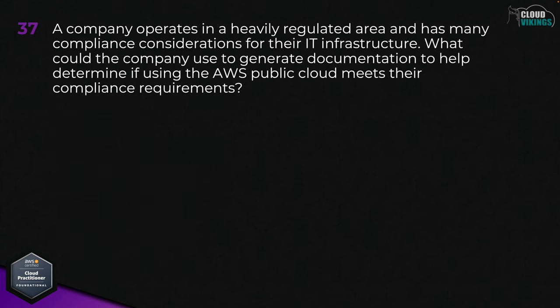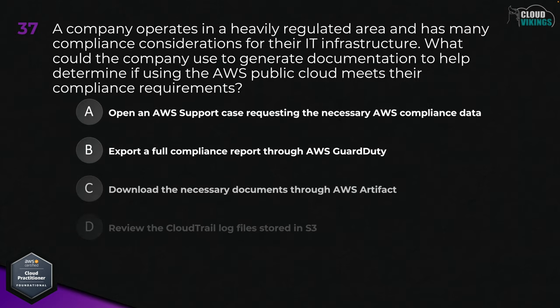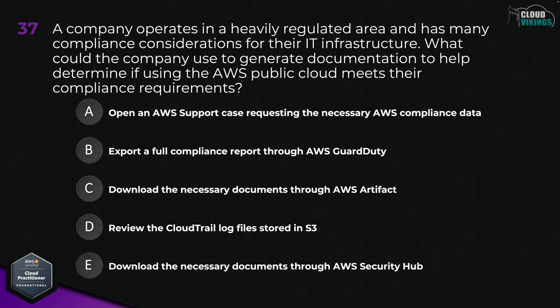Question thirty-seven: a company operates in a heavily regulated area that has many compliance considerations for their IT infrastructure. What could the company use to generate documentation to help determine if using the AWS public cloud meets their compliance requirements? Options are: A, open an AWS support case; B, export a full compliance report through AWS GuardDuty; C, download the necessary documents through AWS Artifact; D, review the CloudTrail log files stored in S3; or E, download the necessary documents through AWS Security Hub. The correct answer here would be C, download the necessary documents through AWS Artifact.